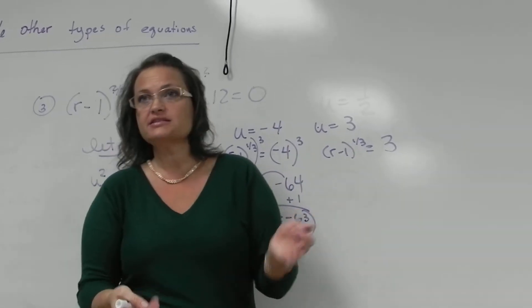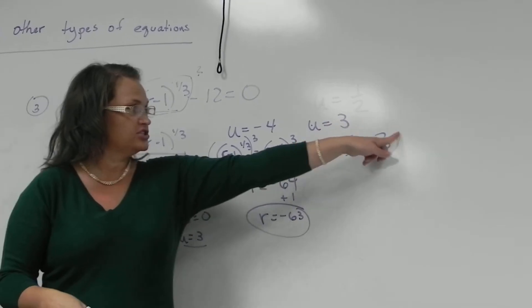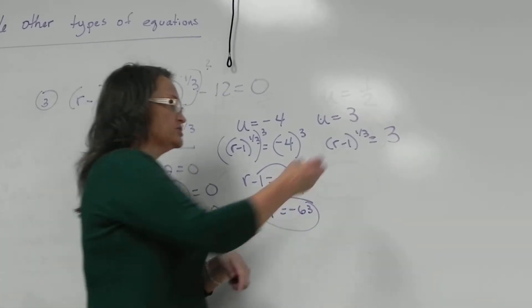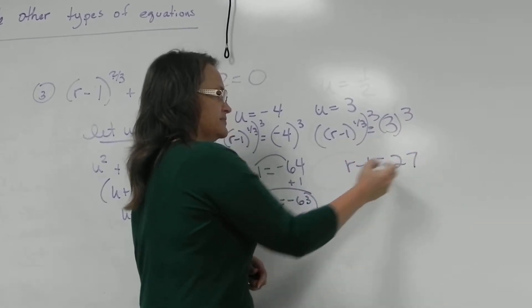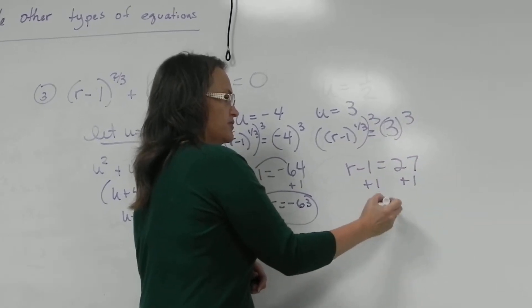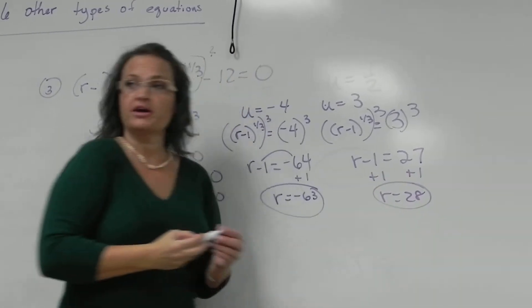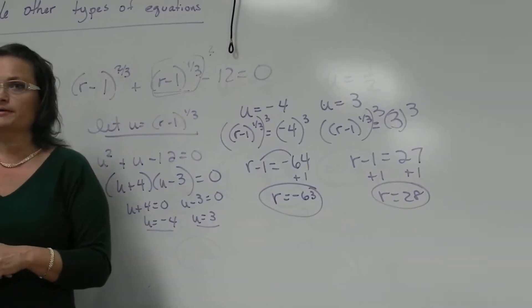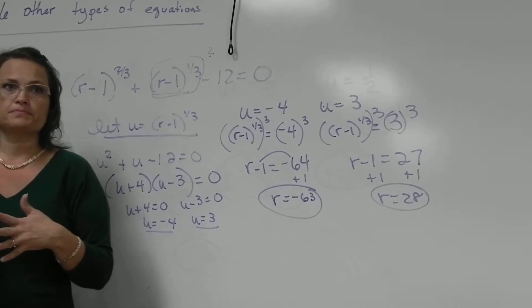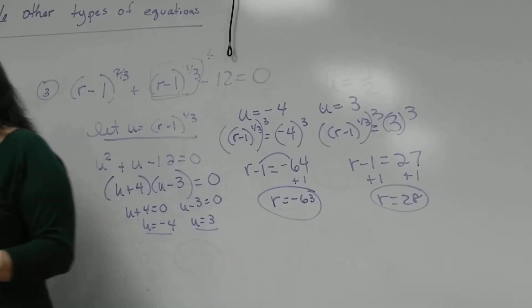Same process is going to work here, cubing each side, and then plus the 1. So just doing things in reverse. So cube of 3 makes 27, then plus 1 to solve, where your final answers are 28 and -63. All right? Questions on that?